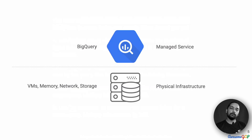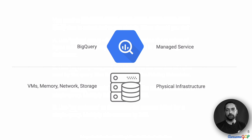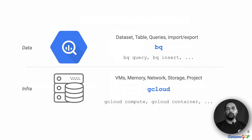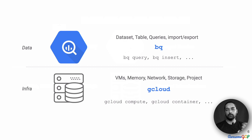Let's look at how Google serves BigQuery. Anything you do on the cloud runs on VMs, memory, network, and storage. So any service that you use is going to use this physical infrastructure. On top of this physical infrastructure is often a managed service provided to you — for example, BigQuery. When you're working with BigQuery, you're typically working with data: datasets, tables, running queries, importing and exporting data. The primary tool for that is BQ — things like BQ Query, BQ Insert, and so on. Whereas when you're provisioning VMs, memory, network, storage, or creating projects, you use gcloud.